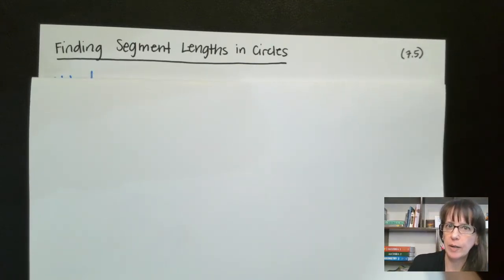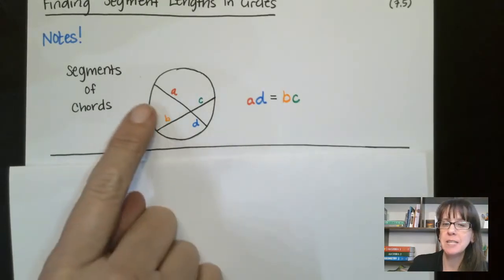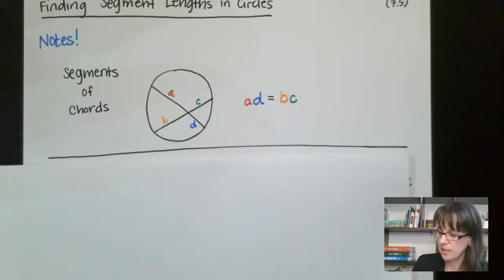Grab your notebook, you're going to want to write a quick note down. That note is this one. Actually, we're going to write a couple of notes down, so you may need to pause the video. Basically, it just says this guy times this guy equals this guy times this guy. So write that down.